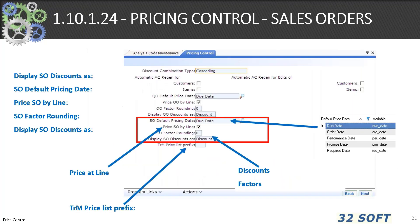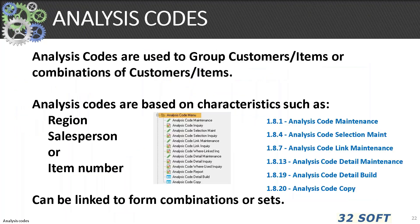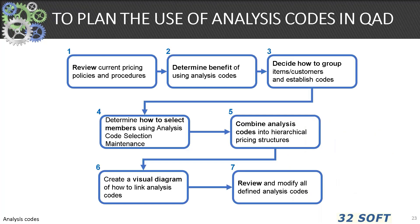In 1.10.1.24, the central four settings determine how sales order price processing will function with discount pricing and rounding. You also have a field for trade activity management. Analyst codes can be used to group customers and items, or combinations of customers and items. Analyst codes can be based on several characteristics such as region, salesperson, or item, and can be linked to form other groups.